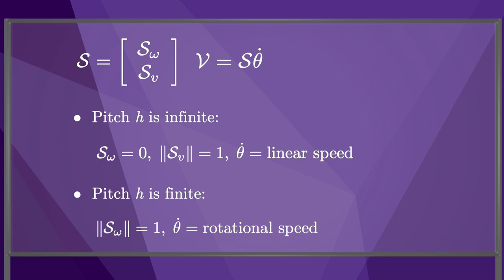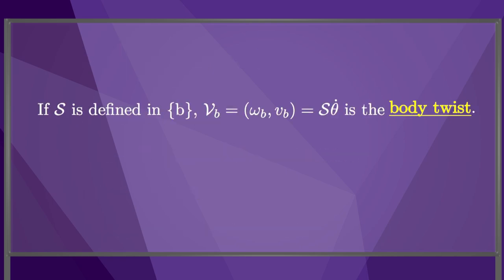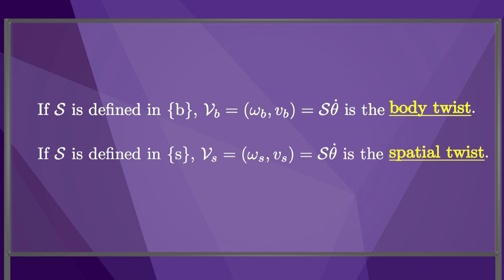If the screw axis S is expressed in coordinates of the body frame B, then S theta dot is called the body twist, VB. If the screw axis S is expressed in the coordinates of the space frame S, then S theta dot is called the spatial twist, VS.